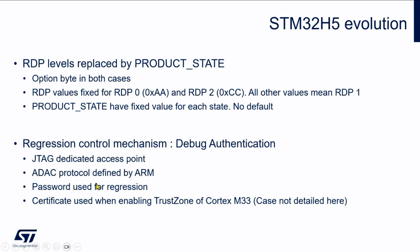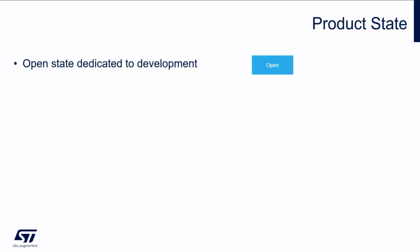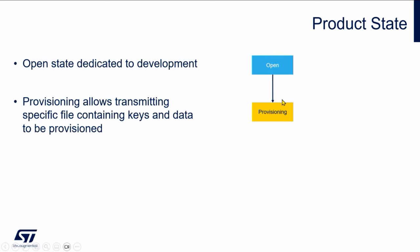The goal here is to show you the minimum change you need to make compared to, for instance, an STM32 F4 device. Let me show you the product states first. The product states are now named and have dedicated values, but we use names to make them more meaningful.